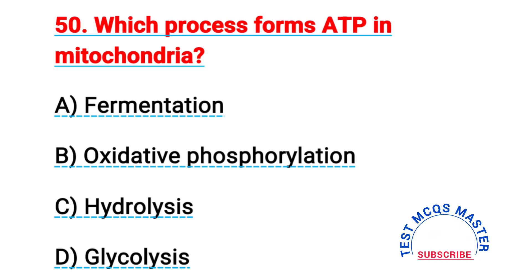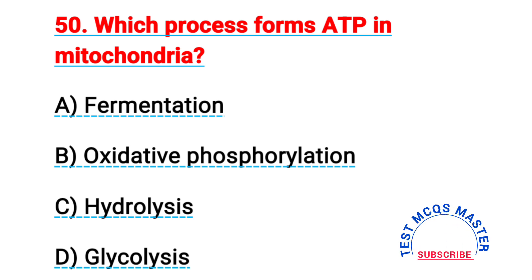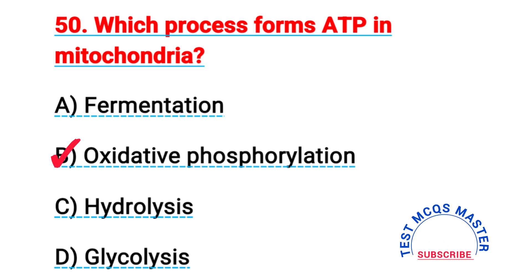Question number fifty: which process forms ATP in mitochondria? The right answer is B, oxidative phosphorylation.